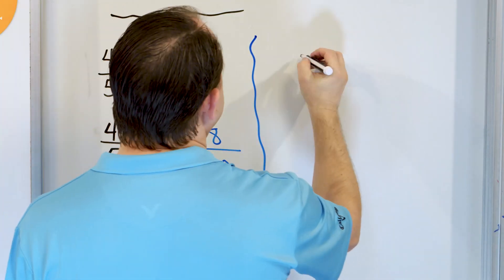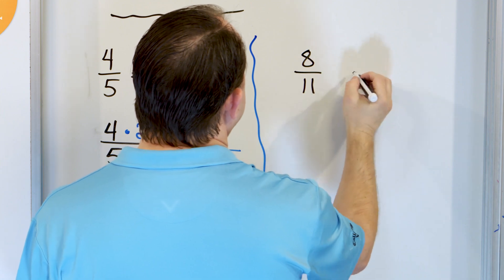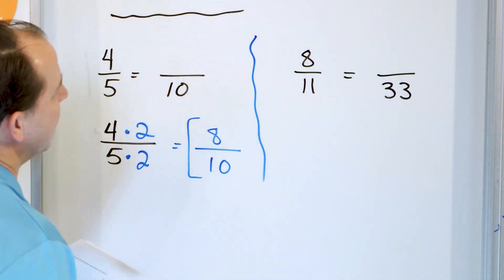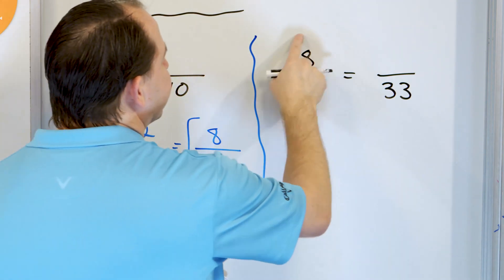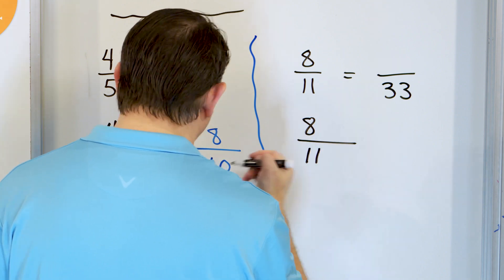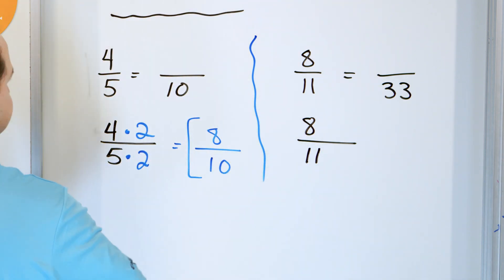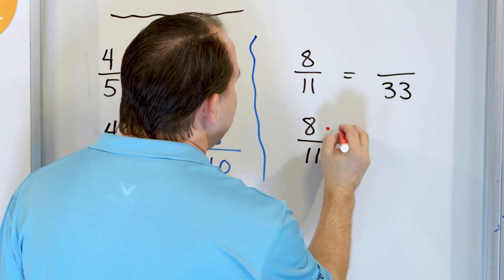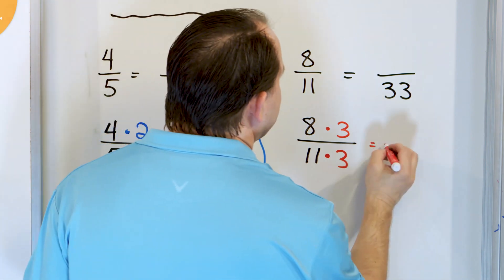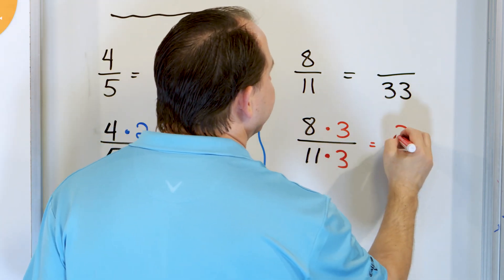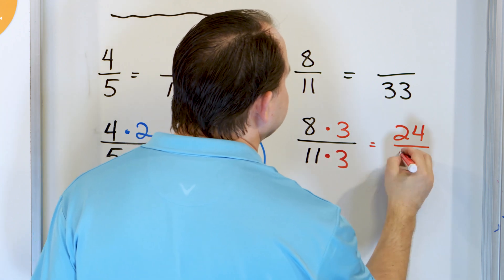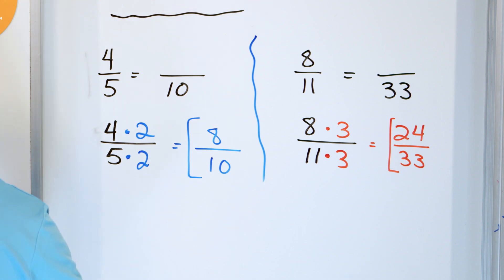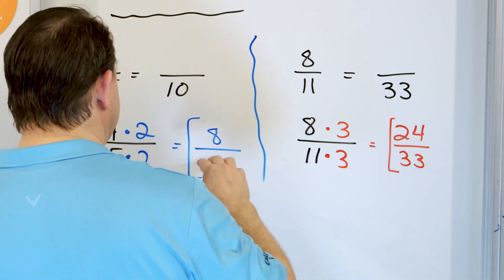What about the fraction 8/11? And over here the equivalent fraction has a 33 in the denominator. We can take this fraction and multiply it by whatever we want — 8/11. What are we going to multiply by? We're trying to get a 33 here, so we have to multiply by 3. And because of that, we're multiplying the top by 3 as well. So on the top, 8 times 3 is 24, and on the bottom, 11 times 3 is 33. So the fraction 24/33 is the same as 8/11.